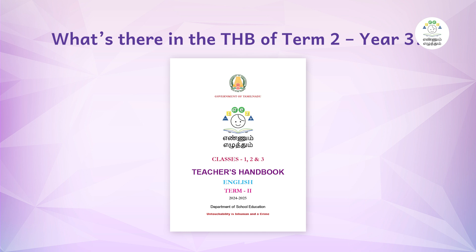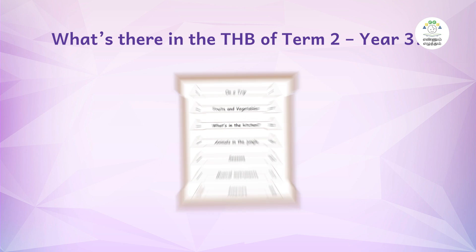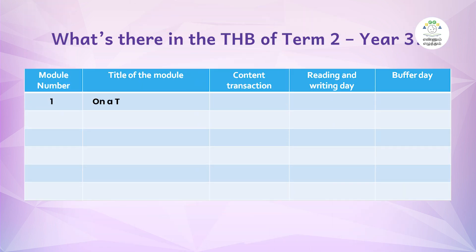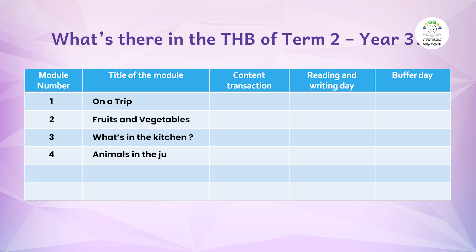Let us look into what is there in Term 2 THB. In the version Term 2, as usual, six modules are put in the same way. We have got: on a trip, fruits and vegetables, what's in the kitchen, animals in the jungle, seasons, and musical instruments.